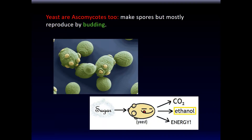One of the most famous ascomycota that you eat and see every single day are yeast. Yeast are ascomycota too — they're sac fungi. They can make sacs, but they don't look like typical sac fungi. They're a very special category because they're unicellular — they don't make mycelium type structures. They're mostly reproduced by budding: a little bud forms, DNA duplicates, and they go into two. You can see a whole bunch of budding occurring.